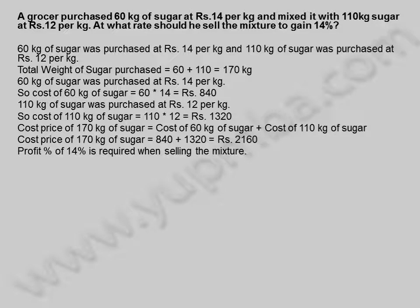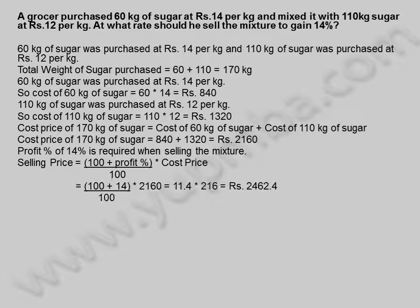A profit percentage of 14% is required when selling the mixture. Selling price is equal to (100 plus profit percentage) divided by 100, into cost price, which equals (100 plus 14) divided by 100 into 2,160, which equals 11.4 into 216, which equals 2,462.4 rupees. Selling price of the mixture is 2,462.4 rupees.